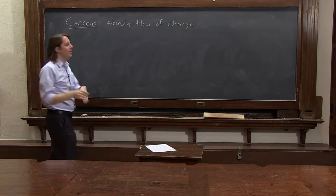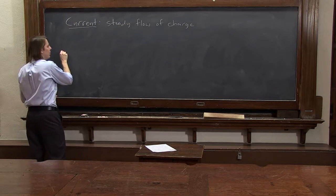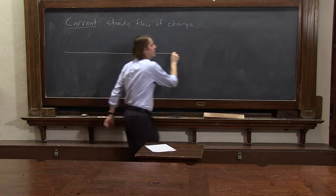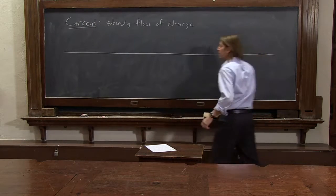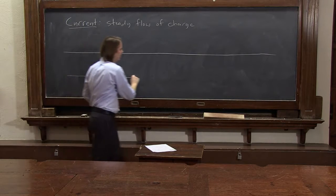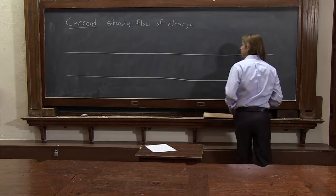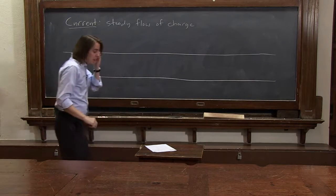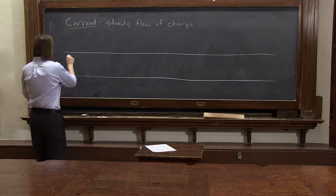So let's look at the definition, mathematical definition of current. I'll draw a wire, a conducting wire, in this case, going all the way across the board. Like that. So this is a conducting wire.